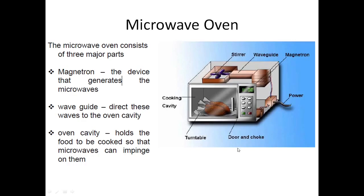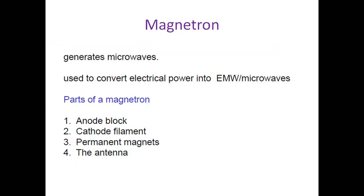The heart of the microwave oven is the magnetron, which generates microwaves by converting electrical power into electromagnetic waves. The magnetron has four main parts: an anode block, a cathode filament, permanent magnets, and an antenna. The antenna radiates microwaves, while the permanent magnets create the necessary magnetic field for operation.